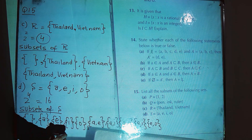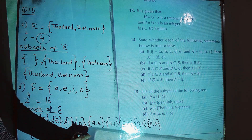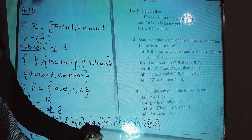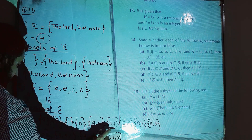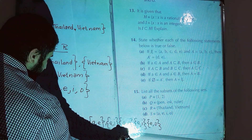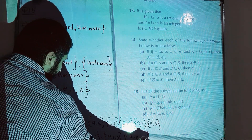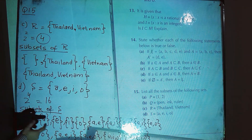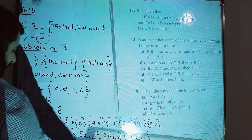Then subsets with three elements — writing all possible combinations: {a, e, i}, {a, e, o}, no combination should be repeated, then {i, e, o} — wait, {e, i, o}. These are subsets with three elements. Then write down the subset with four elements, which is basically the same set: {a, e, i, o}. Count them: one through fifteen.